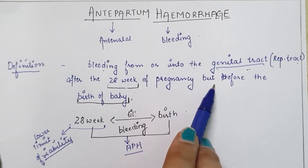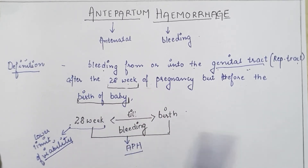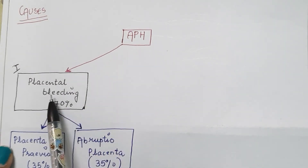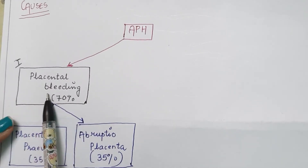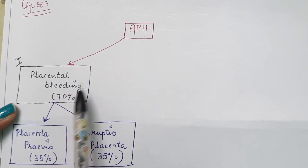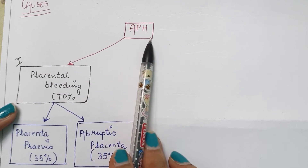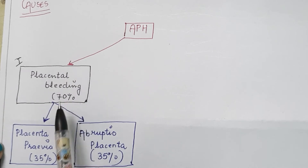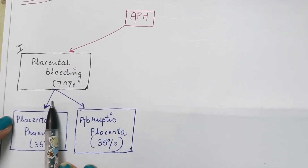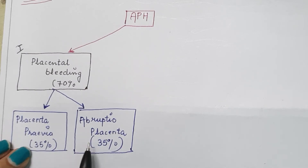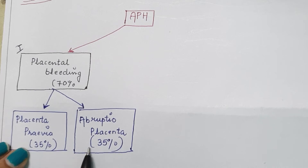Next are the causes of antepartum hemorrhage. The causes are divided into three headings. The first heading is placental bleeding, which contributes 70% of cases — meaning in 70% of antepartum hemorrhage cases the cause is placental bleeding. Under placental bleeding there are two conditions: placenta previa and abruptio placenta, both contributing 35% each.